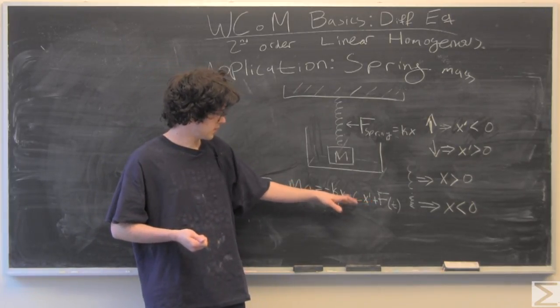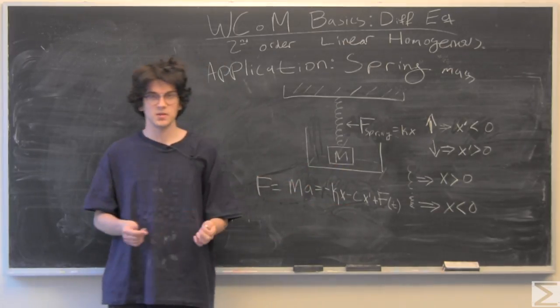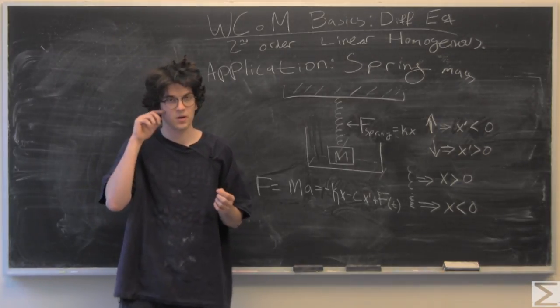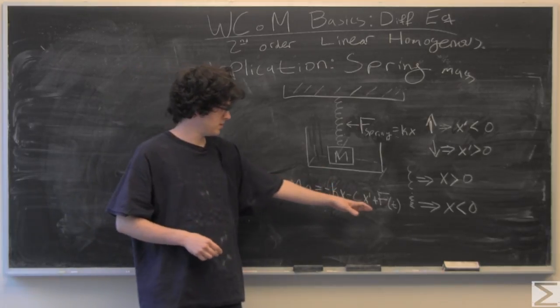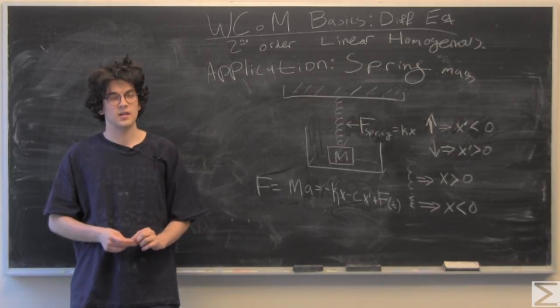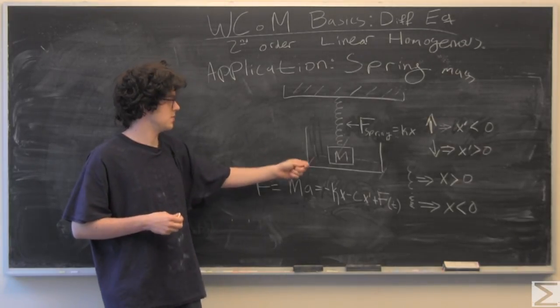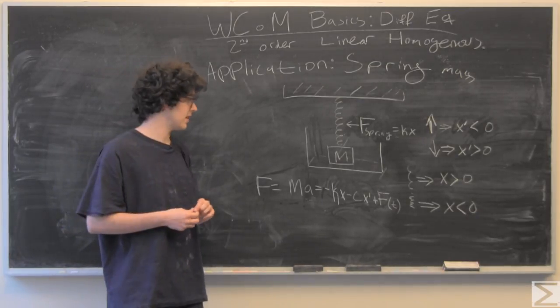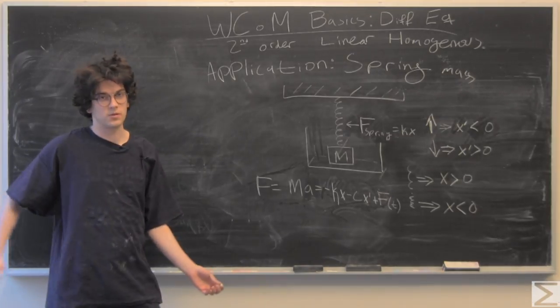We also have this damping system. So c is the damping coefficient, and that's going to be multiplied by the velocity of our system. We also add some force as a function of time. The force being a function of time means we might have an extra sinusoidal force or something like that. We can rearrange this and get a linear second-order differential equation.